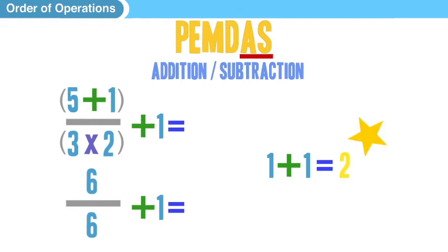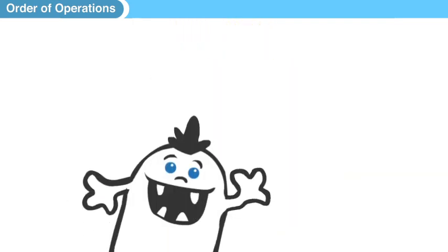You know how to do that. So that complicated problem broke down to a very simple form of 1 plus 1. Pretty cool, huh? And that's it. Now you know how to do order of operations.